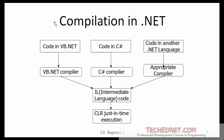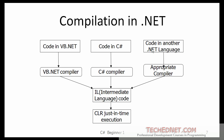How does compilation in .NET work? You write your code, let's say in C#. You use the C# compiler, and that compiler compiles it to an intermediate language code, called IL code. The same thing happens if you compile the program in VB.NET or any other supported language — you need the corresponding compiler to convert it to IL. Once you have the IL code, you can run it with CLR using just-in-time execution.